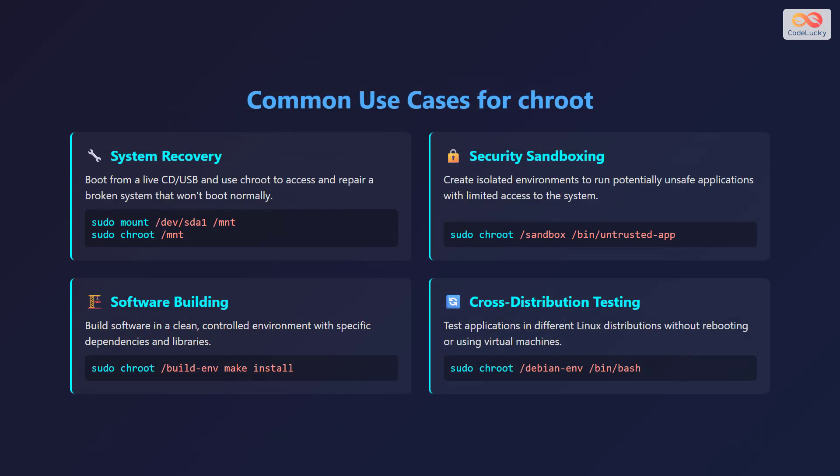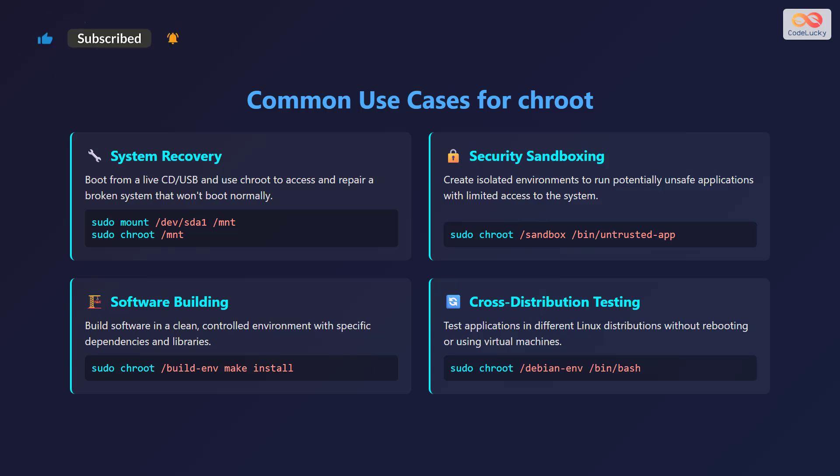The chroot command has several common use cases. One is system recovery — you can boot from a live CD or USB and use chroot to access and repair a broken system that won't boot normally, for example: sudo mount /dev/sda1 /mnt, then sudo chroot /mnt. Another use case is security sandboxing, where you create isolated environments to run potentially unsafe applications, e.g., sudo chroot /sandbox /bin/untrusted_app. It is also used for software building in a clean, controlled environment: sudo chroot /buildenv make install.